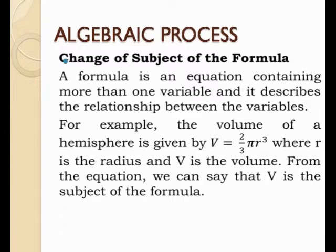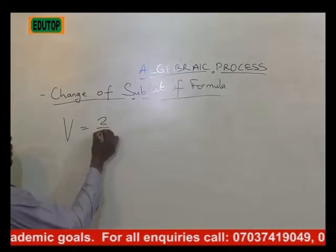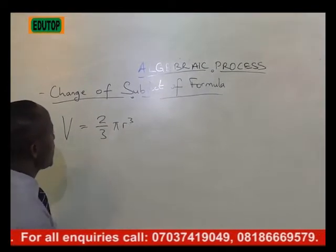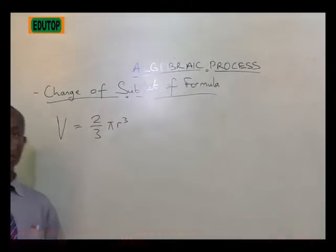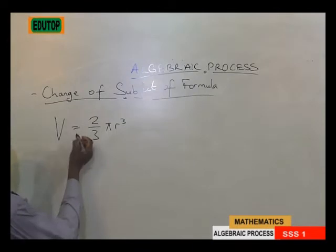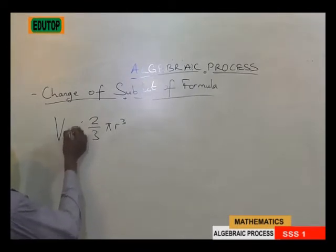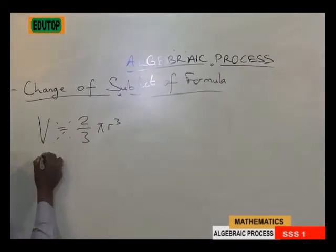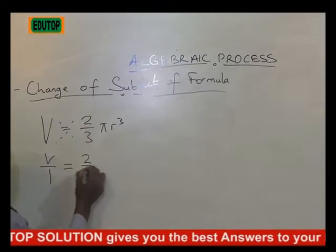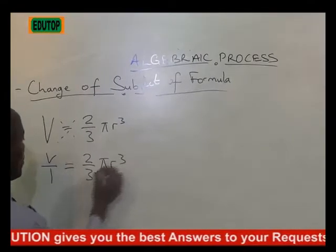Using the volume of a hemisphere, we will now make R the subject of the formula. We said V is equal to 2 over 3 pi R cubed. We have been told to make R the subject of the formula. The first thing we will do is cross-multiply, because this is just like V over 1 is equal to 2 over 3 pi R cubed.